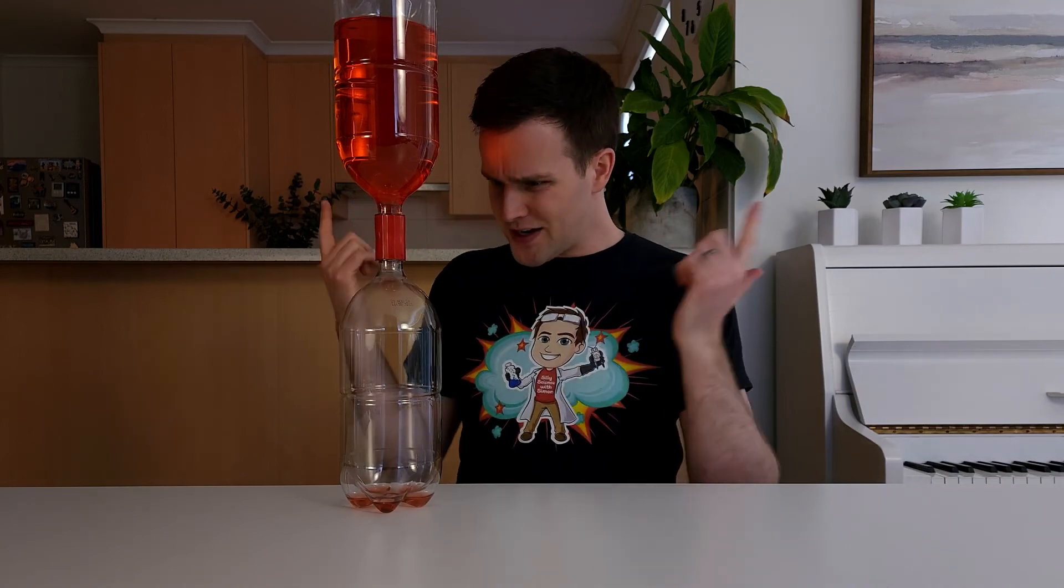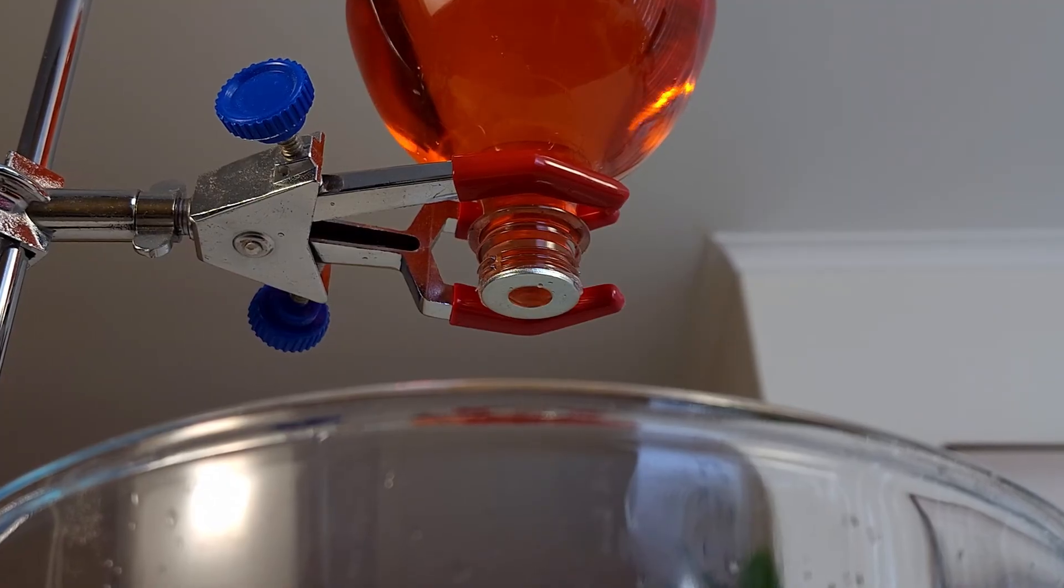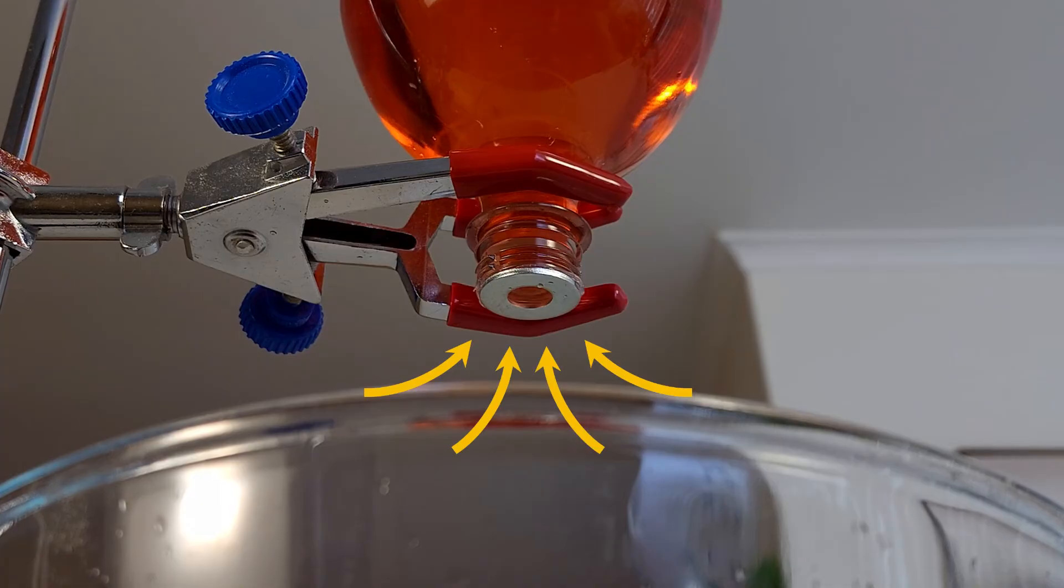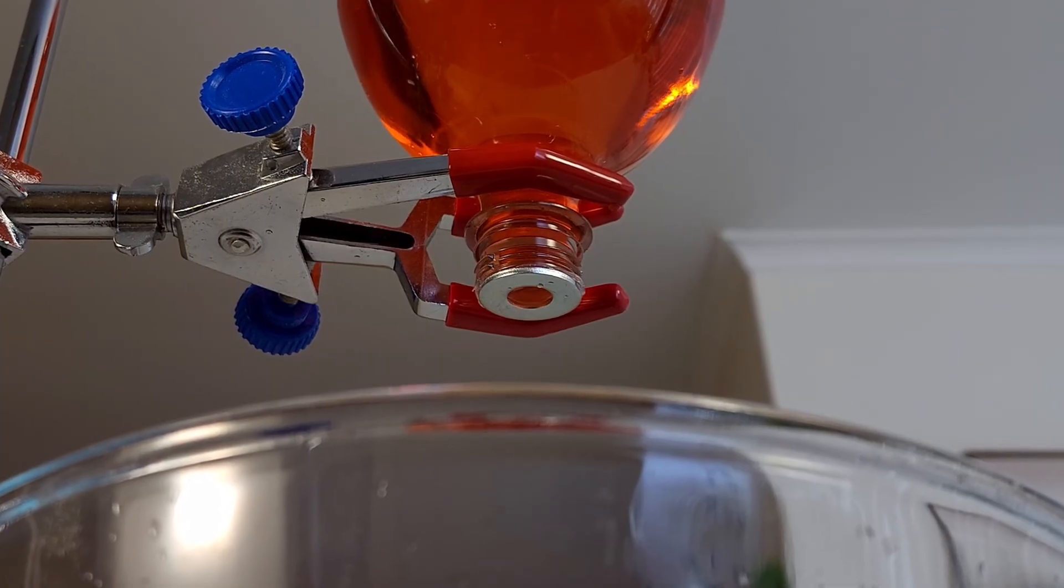If you didn't give it a spin, you might have noticed some of the water stayed in the top bottle, even though there's space for it in the bottom bottle. What? That's because water molecules are really good at holding onto each other, and also because the air around the bottle pushes up on this layer of water and holds it back.